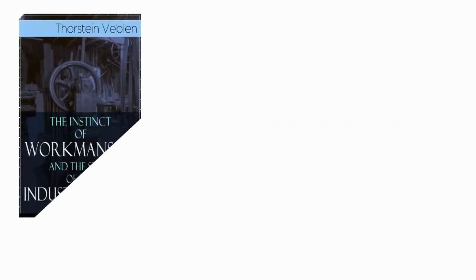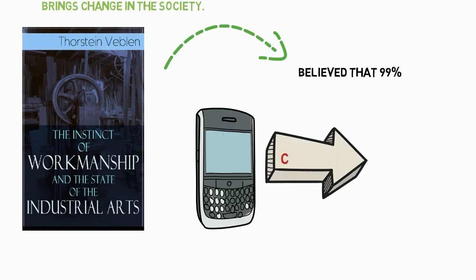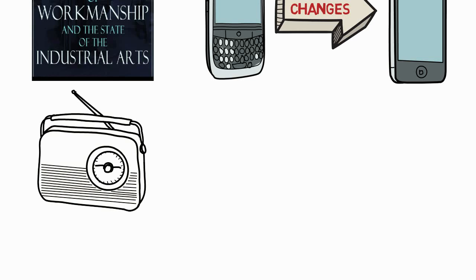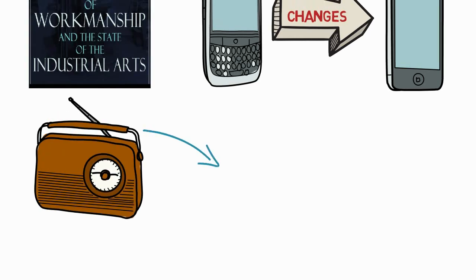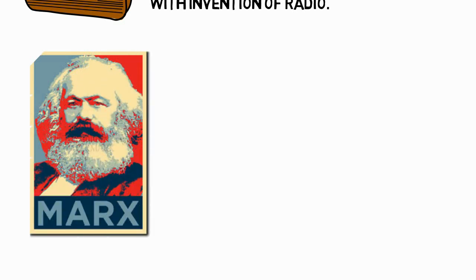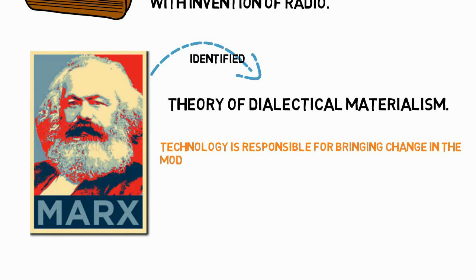T. Veblen, in his book The Instinct of Workmanship and the State of the Industrial Arts, believed that 90% of social changes come because of the change in technology. Ogburn identified 150 social changes with the invention of radio. Veblen said if a radio can bring this many changes, then technology in totality can influence society immensely. Marx always identified the importance of technology in his theory of dialectical materialism — technology is responsible for bringing change in the mode of production, which brings social change.